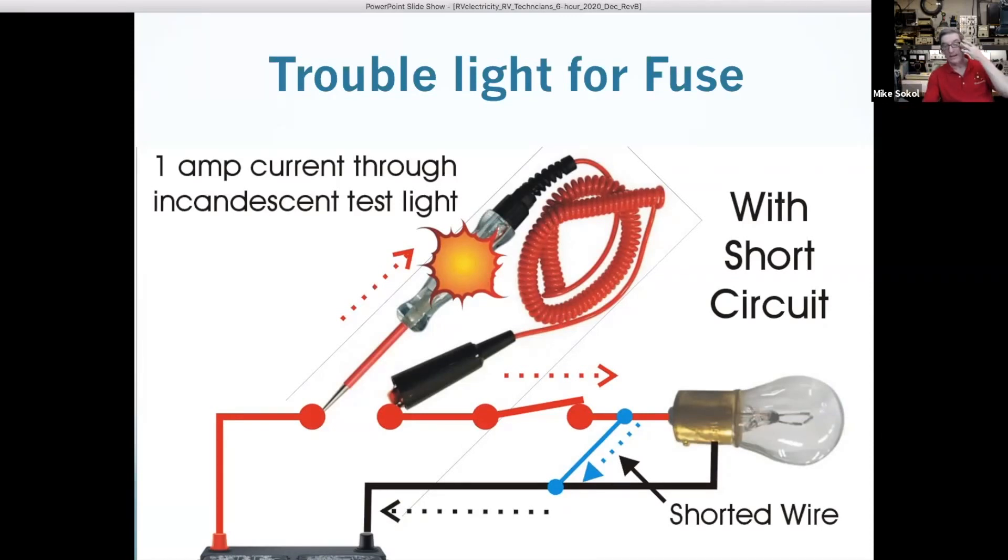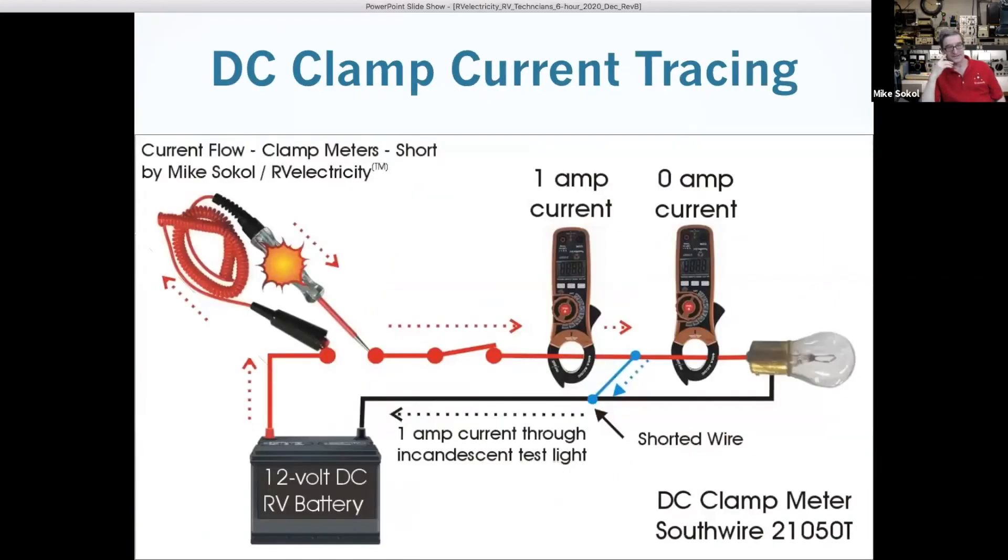So if you have a test light like this, and somewhere in that whole wiring mess there's a short circuit, all you do is get yourself a DC clamp meter.